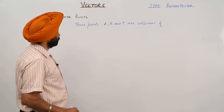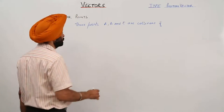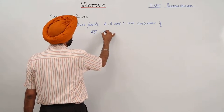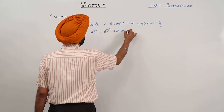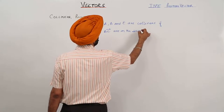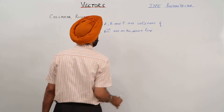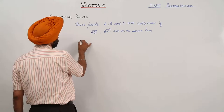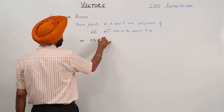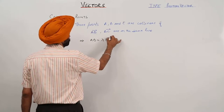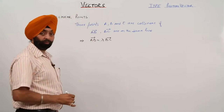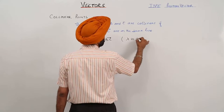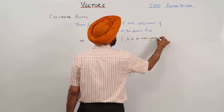If three points A, B, and C are collinear, then vector AB and vector BC are on the same line. This is only possible if vector AB is equal to lambda times vector BC, where lambda is a non-zero scalar.